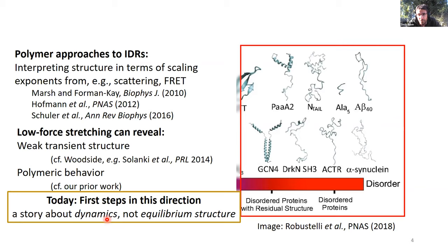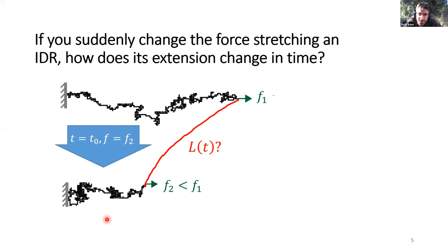So the question we're going to focus on in this short talk is as follows. If you take a disordered chain here sketched in kind of a random walk way, and you suddenly change the force stretching it, so going from a high force to a low force, F1 to F2, a so-called force quench experiment, how does the extension change in time? Equilibrium length changes, but what is the path of the red line? What is the length as a function of time? That's the goal today.